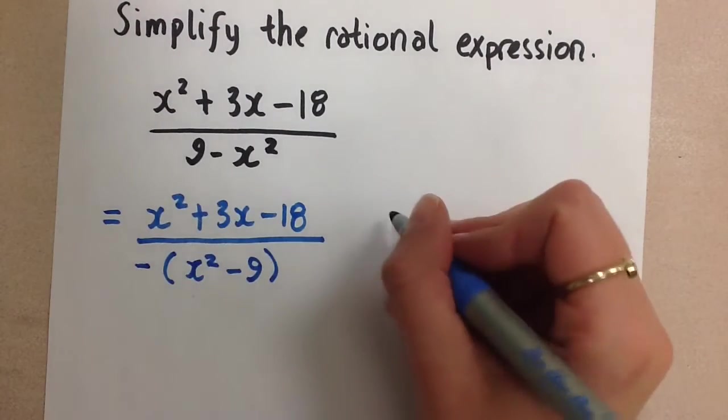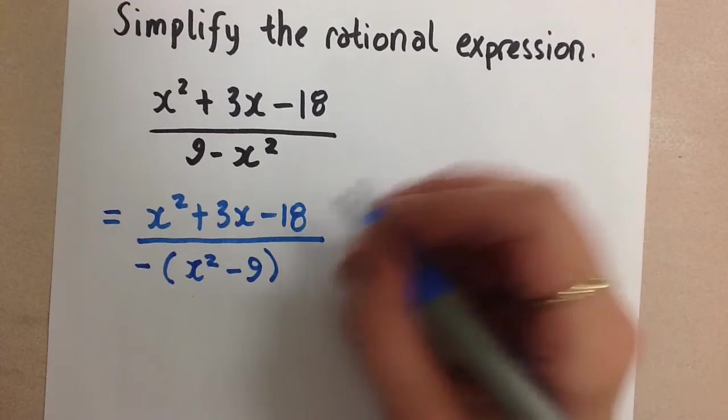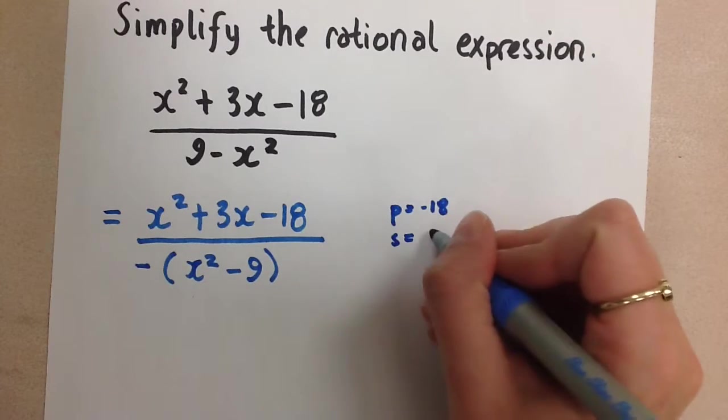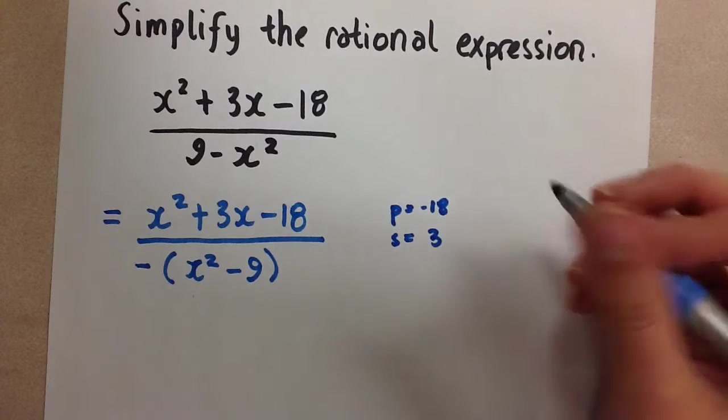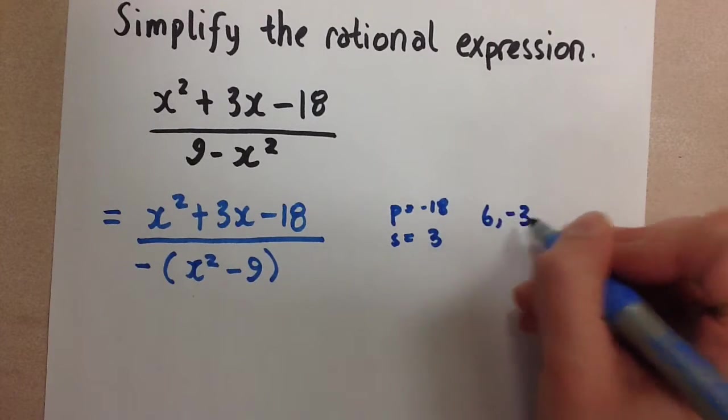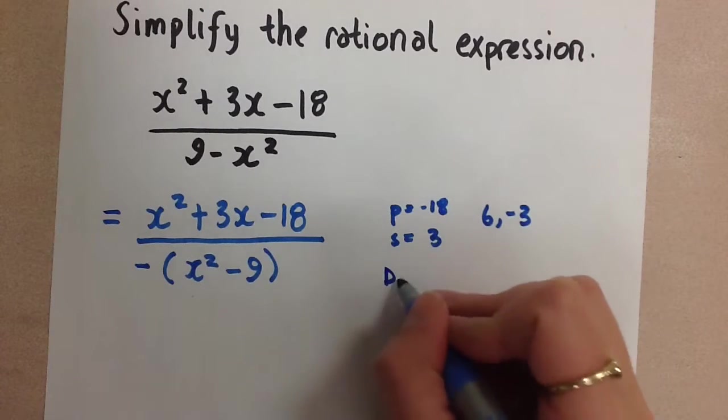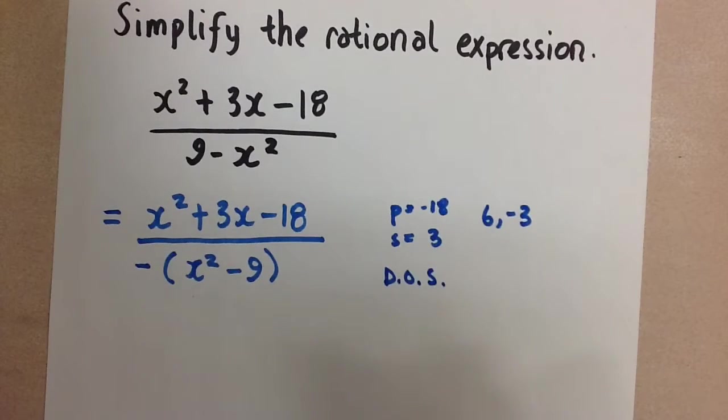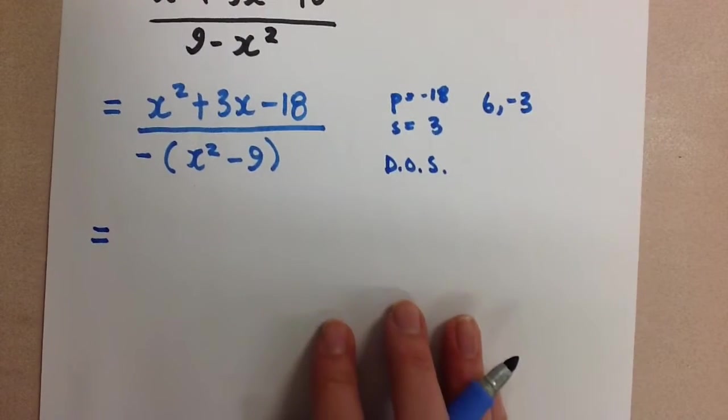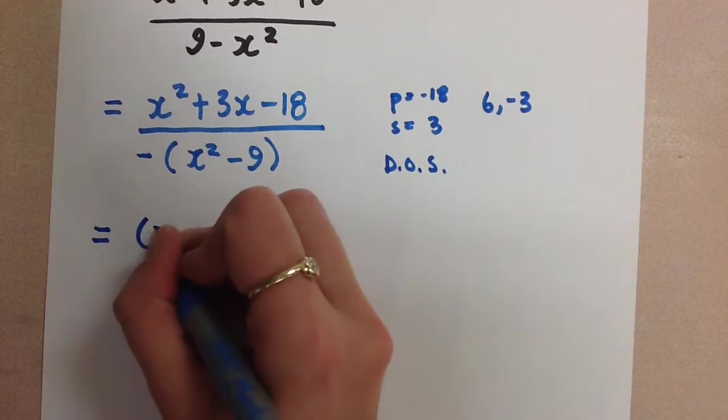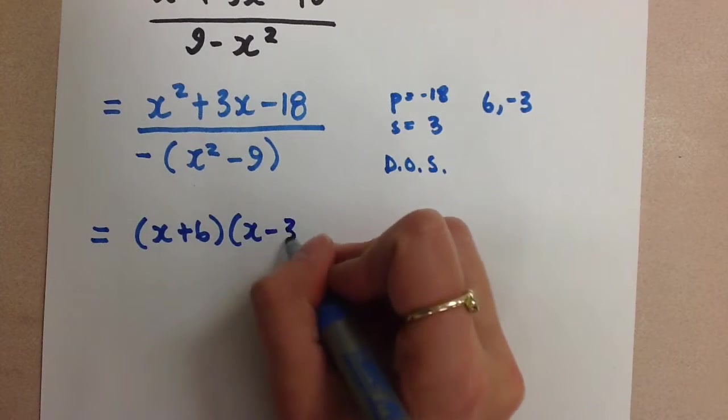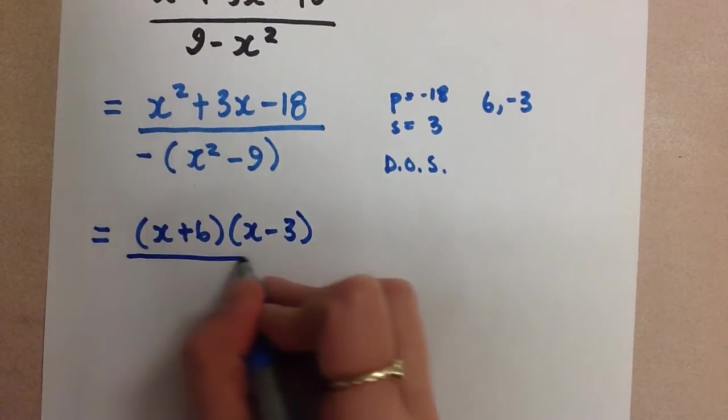So in the numerator for that simple trinomial, my product is negative 18 and my sum is positive 3. So the two numbers that we'll need to satisfy these conditions are positive 6 and negative 3. And then in my denominator, we have a difference of squares, as we said before.